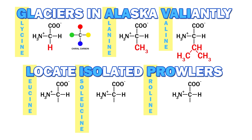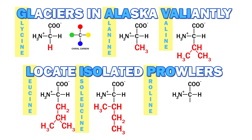In leucine, the root grows longer, and here the root analogy stops. You can think of isoleucine as a conformational isomer of leucine. Proline is the only ring structure, but note it is not aromatic — hence it is not one of the three aromatic amino acids.